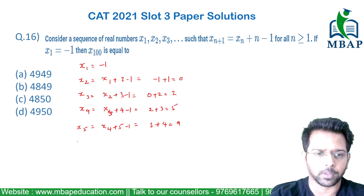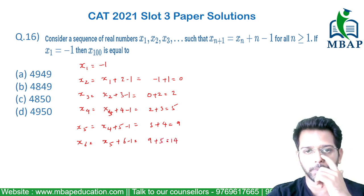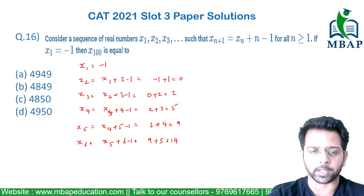Let's check one more value, x6. x6 will be x5 plus 6 minus 1, which is 9 plus 5 coming out to be 14. So all these values is what I can figure out now.